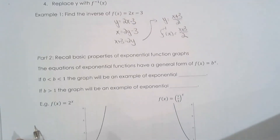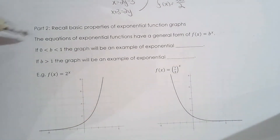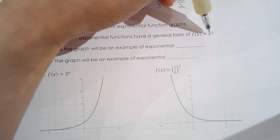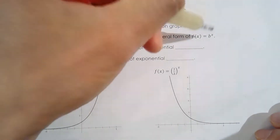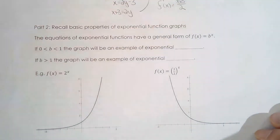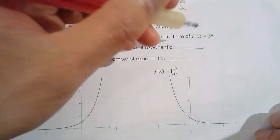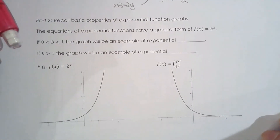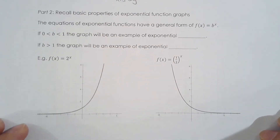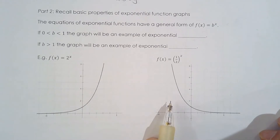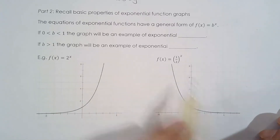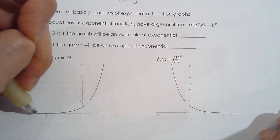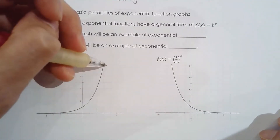Another thing you did in grade 11 is exponential functions. The equation of an exponential function has the general form f(x) = b^x. It makes sense to call this an exponential function because the variable is located in the exponent. If you recall from last year, exponential functions have two different shapes — one that shoots up, called exponential growth, and one that becomes asymptotic very quickly, called exponential decay.